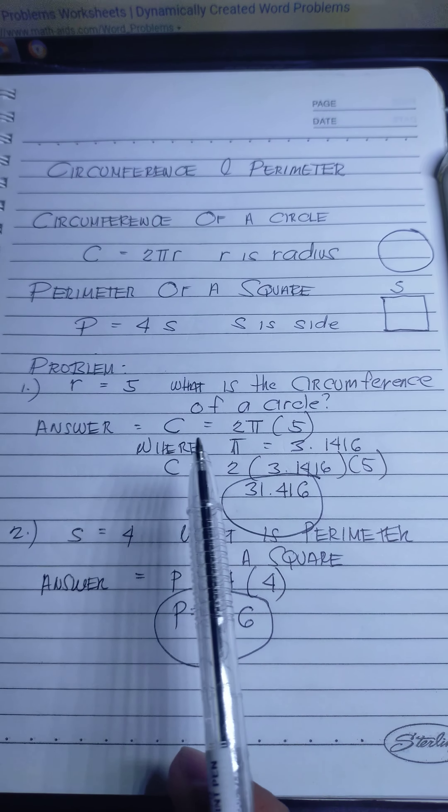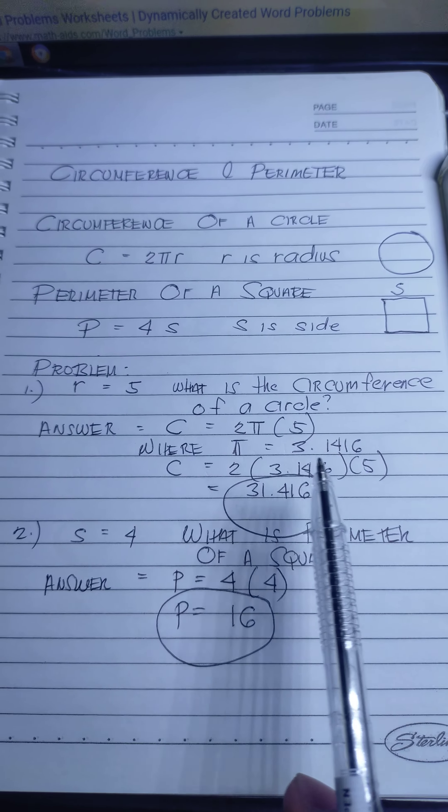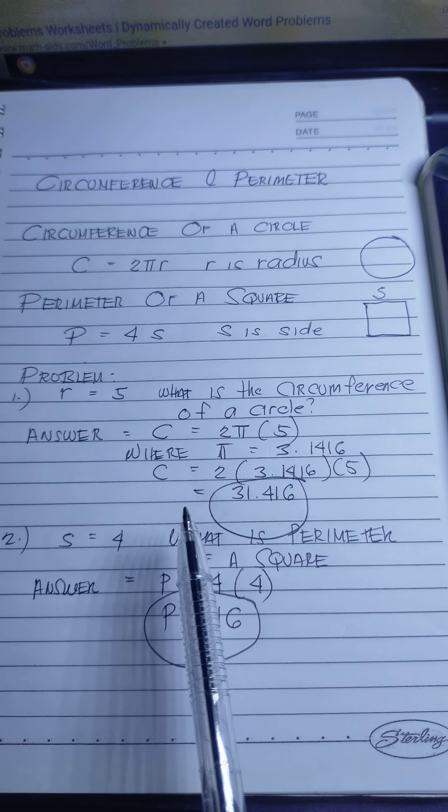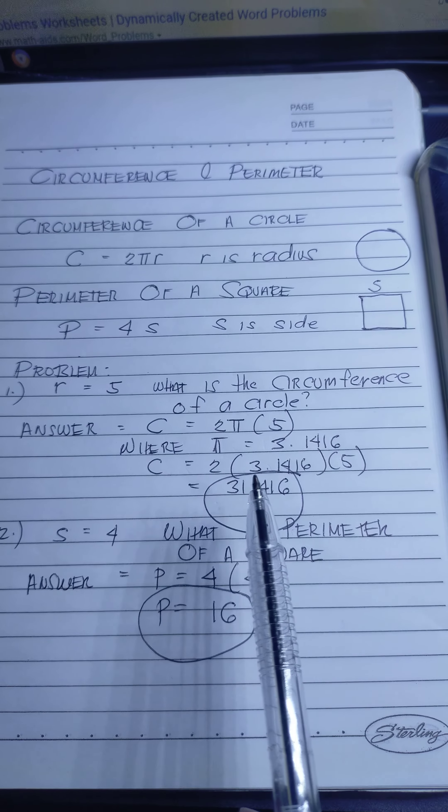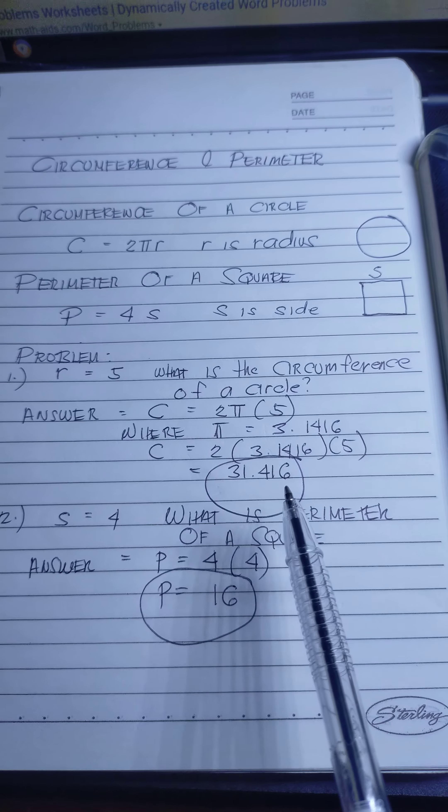The answer is C = 2π × 5, where π is always 3.1416. So circumference is 2 × 3.1416 × 5. The answer is 31.416.